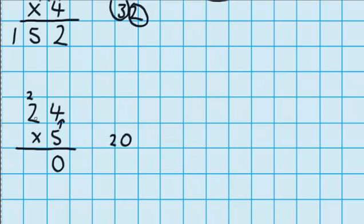Now you know that 24 is made up of a 4 and 2 tens. So our next job is to work out what 5 groups of 2 tens would be. Well, 5 groups of 2 tens would be 10 tens, or 100. So 10 tens plus the 2 tens that we carried would be 12 tens, which gives us our answer of 120.